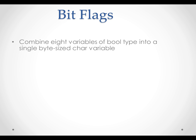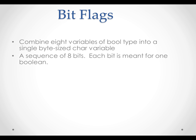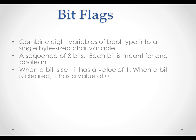What else can we do to reduce the use of memory and speed up the process? Bit flags. Instead of using multiple boolean variables, we can combine the variables into a single byte-sized char variable. A char variable contains 8 bits. Each bit is meant for one boolean variable. When a bit is set, it has a value of 1. When a bit is cleared, it has a value of 0. These bits are usually referred to as bit flags.